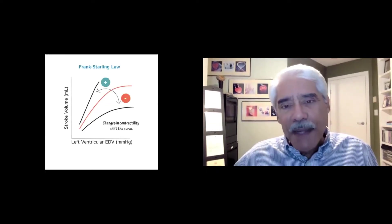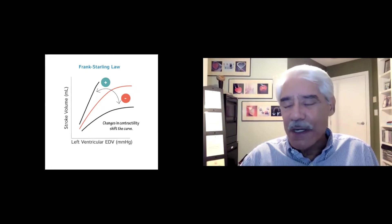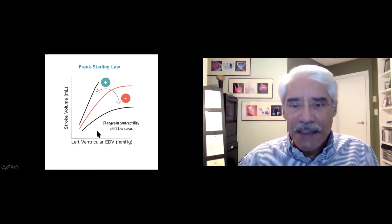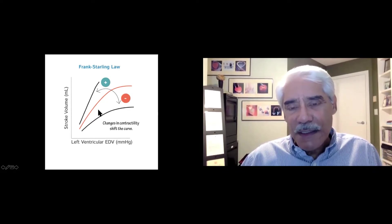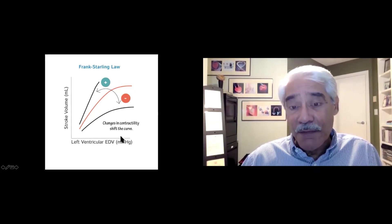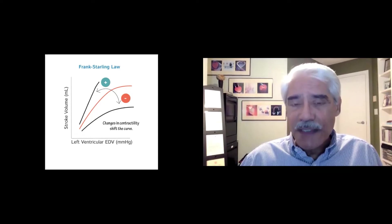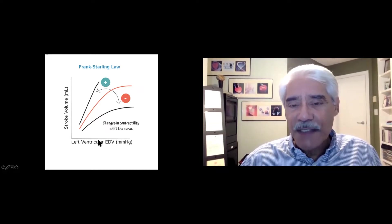Going back many years to the Frank-Starling law — taking you back to your medical school days — you know that there is a relationship between left ventricular end-diastolic volume or pressure and the stroke volume. In the normal situation, as the left ventricular volume increases, the stroke volume increases. But when you have systolic dysfunction of the heart, the curve is shifted downwards and to the right, and you can have a fair amount of volume in the left ventricle at end-diastole with no significant increase in stroke volume. But if the curve is shifted to the left — where there is increased contractility or a medication increases contractility — then the stroke volume rises with only mild changes in left ventricular volume.